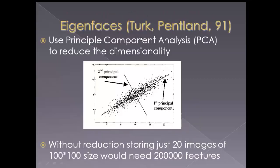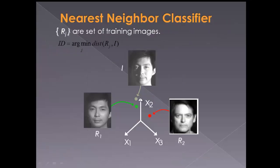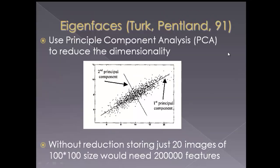The idea of Eigenfaces was to reduce the dimensions of the image. If the image is very small, the information is not good enough for recognition. Typically, images of 200x200 pixels are used, amounting to 40,000 pixels per image. The idea of PCA was to reduce the components of this feature vector.